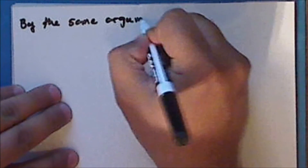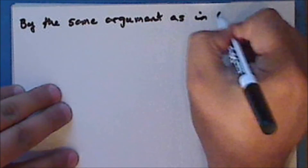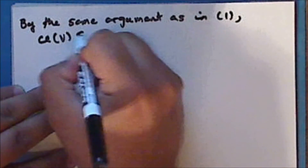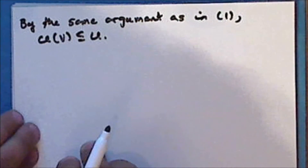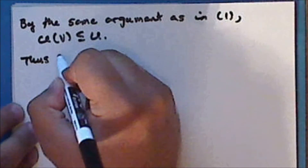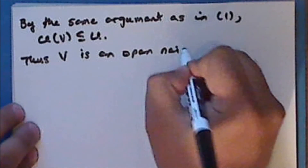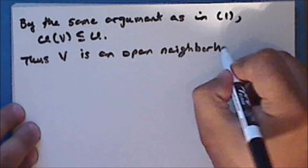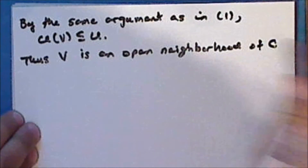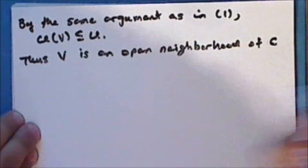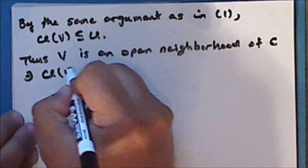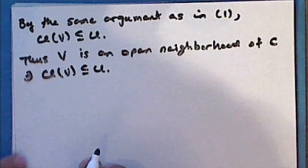By the same argument as in statement 1, we have that the closure of V is a subset of U. And thus V is an open neighborhood of the closed set C such that the closure of V is contained in U.